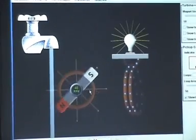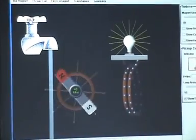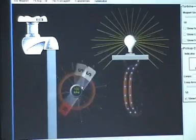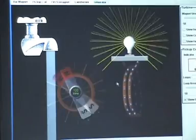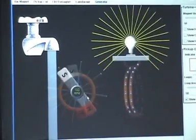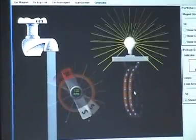If I make the magnet move faster by turning on more water, it's going around more quickly. And as a result, my light bulb flashes more quickly. Once again, all you need is a magnet and a coil of wire to generate electricity.